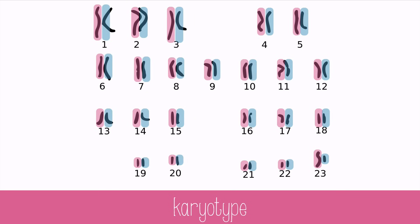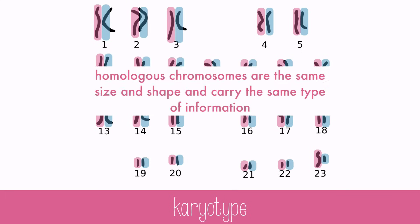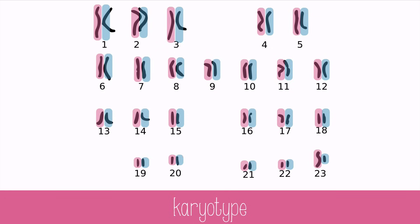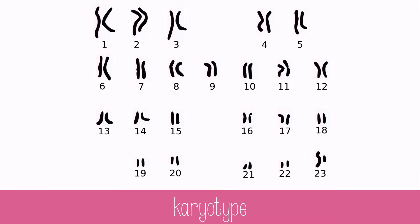The first 22 pairs of chromosomes are said to be homologous, because they are the same size and shape, and carry the same types of information. The last pair of chromosomes are called the sex chromosomes, because they determine whether the person is a male or a female. An X and a Y chromosome makes a male, but two X chromosomes makes a female.